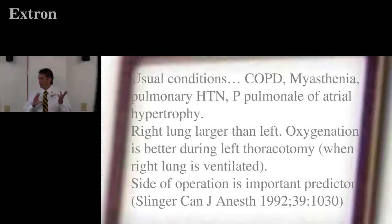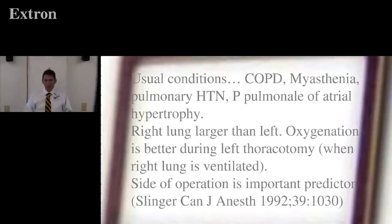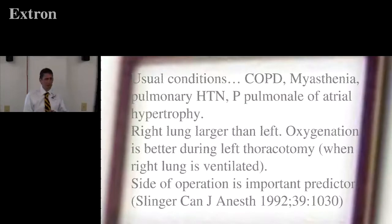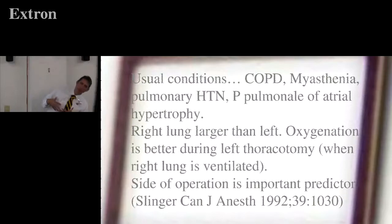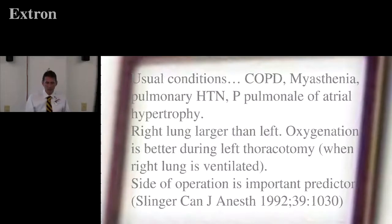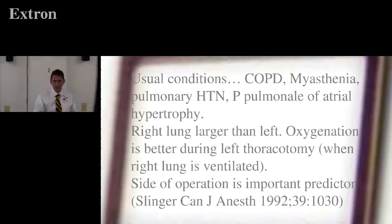The right lung is bigger than the left — the left is carved out for the heart. So oxygenation is better during left thoracotomy. If you're operating on the right lung, you're not ventilating it but still have some perfusion, and because it's bigger you've got relatively more perfusion going through the non-ventilated side. Oxygenation stays better on the left because there's less VQ mismatch.